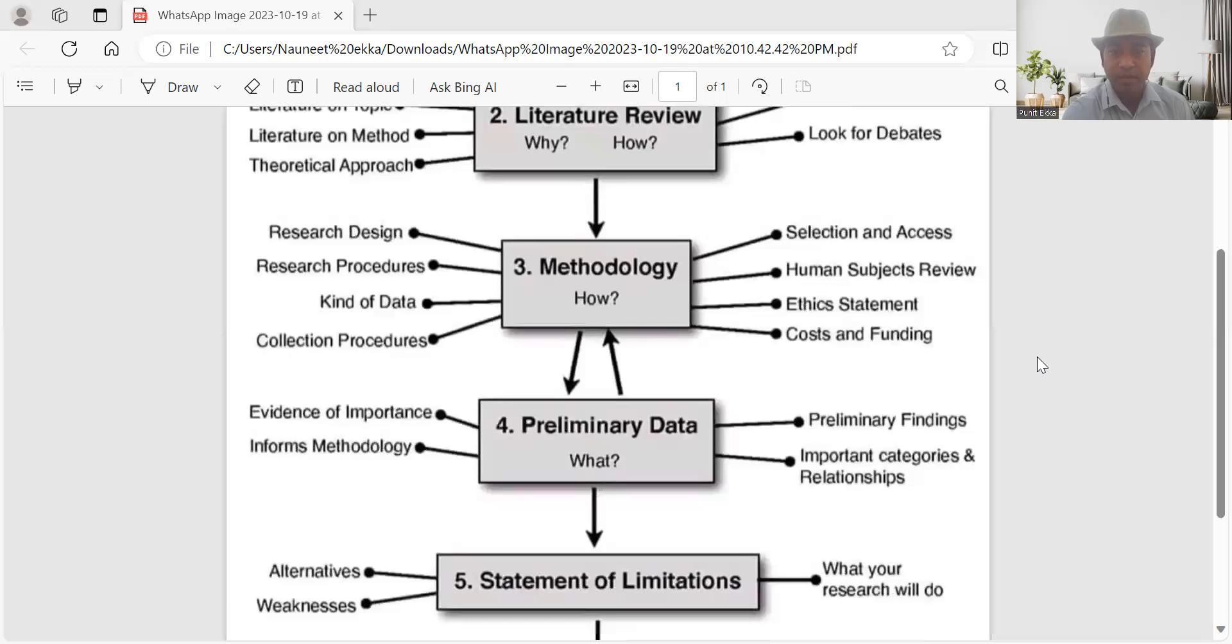The fourth is preliminary data. What is this data all about? Most of the time, researchers collect primary data. In some cases, secondary data is good enough. But most of the time in empirical study, people go in the field and collect the data. This point talks about that.